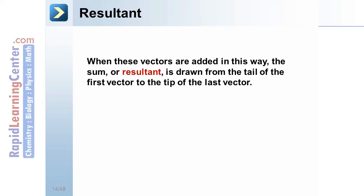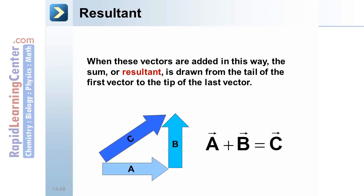The resultant. When these vectors are added in this way, the sum, or resultant, is drawn from the tail of the first vector to the tip of the last one. Like our previous example, a plus b gives you an answer, c, which is the resultant. The vector sum of a plus b equals the vector c, the resultant.